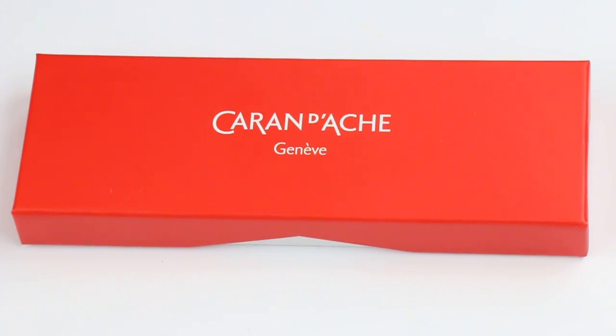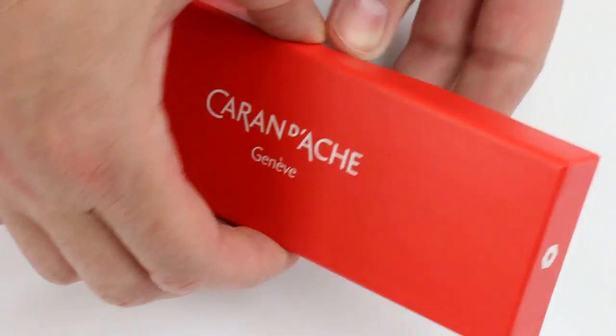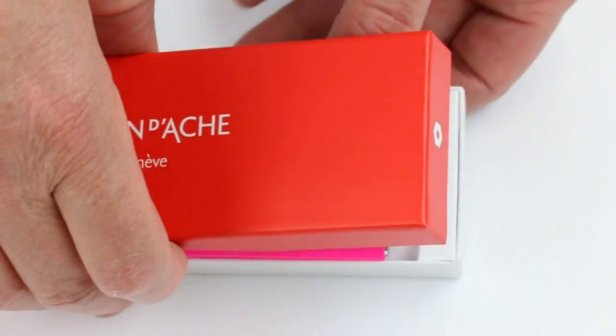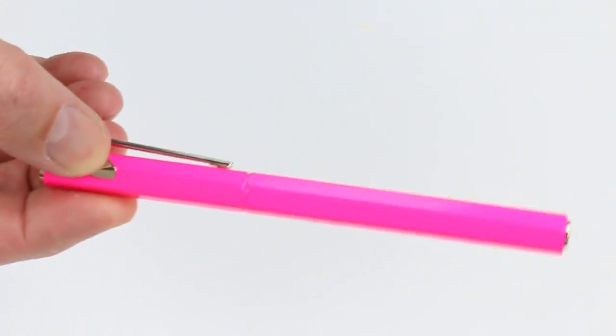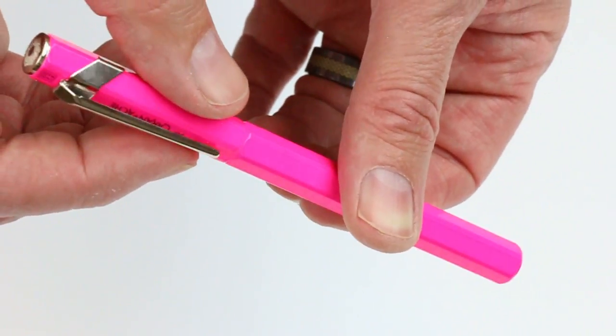This is the Caran d'Ache 849 fountain pen. It comes in a red cardboard box with the Caran d'Ache logo on the top of the box lid which lifts off. Inside is the Caran d'Ache 849 fountain pen.